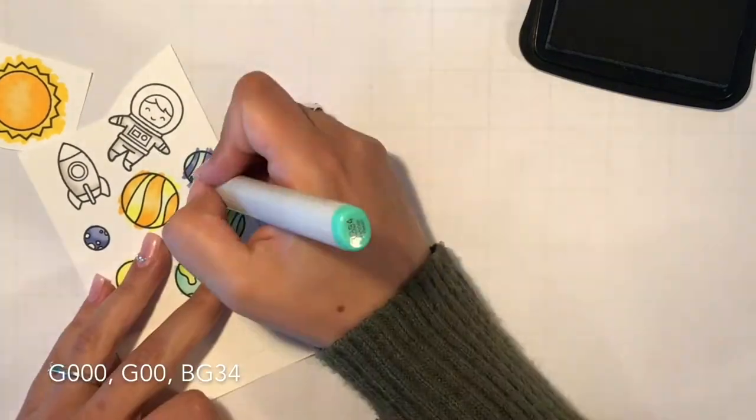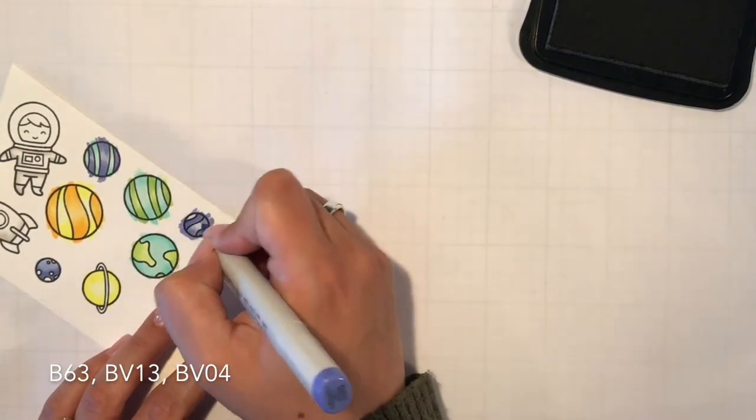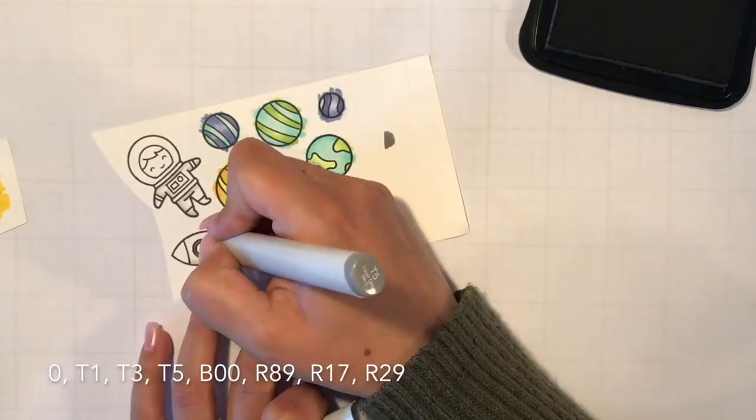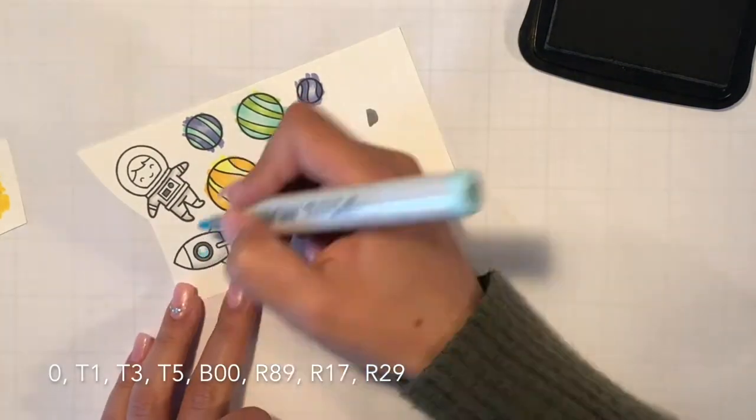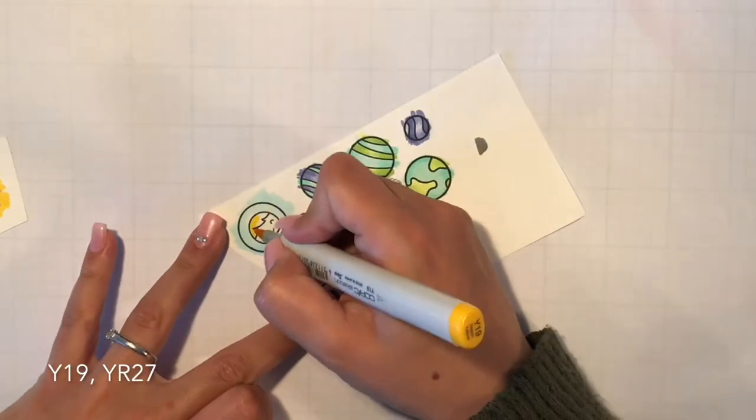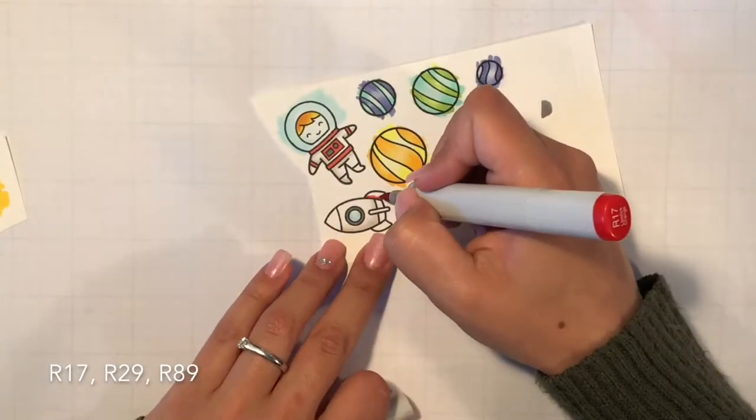When I'm coloring with my Copic markers I always start with my lightest color, then go in with my medium color and then with my darkest color. But it always depends on the color combinations I'm using. Sometimes I just start with my lightest color, then go in with my darkest color, go in with my medium color and finally with my lightest color again.